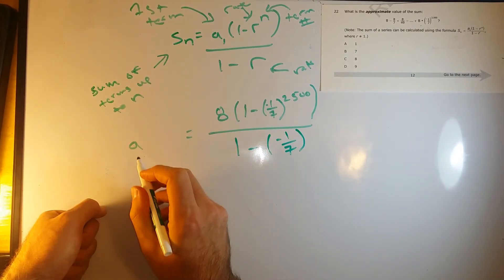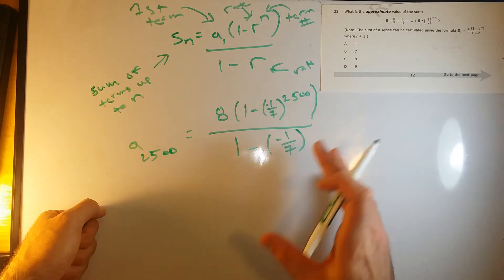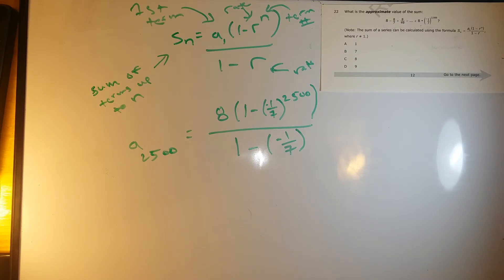Instead of saying A sub N, I'm going to say A sub 2,500, because we're trying to find out the sum of the first 2,500 terms. So now we just got to plug this in. We're just plugging in our values into that formula they gave us.